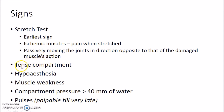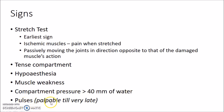Other signs of Compartment Syndrome include tense compartment, hypoesthesia and muscle weakness of the areas supplied by the involved nerves. Compartment pressure greater than 40 mmHg points to Compartment Syndrome. Remember, pulses will be palpable till very late in Compartment Syndrome, so presence of pulses does not rule out Compartment Syndrome.